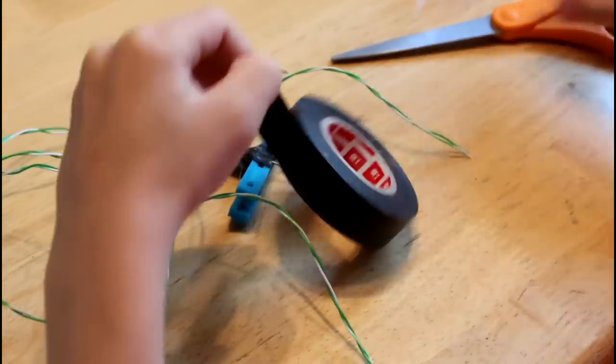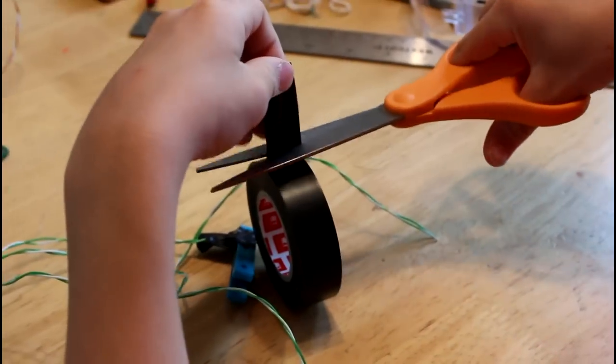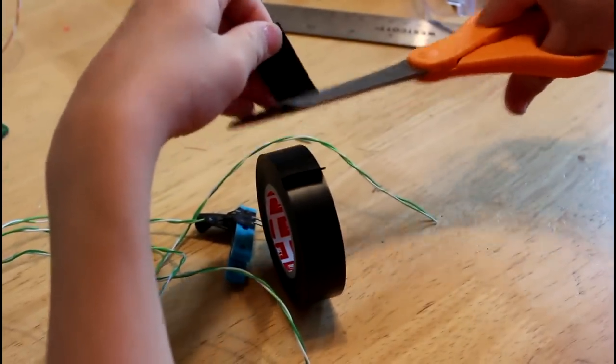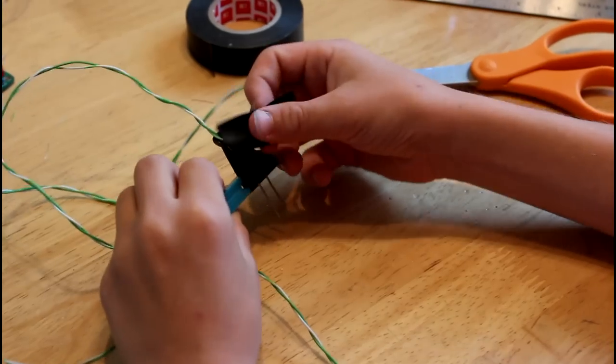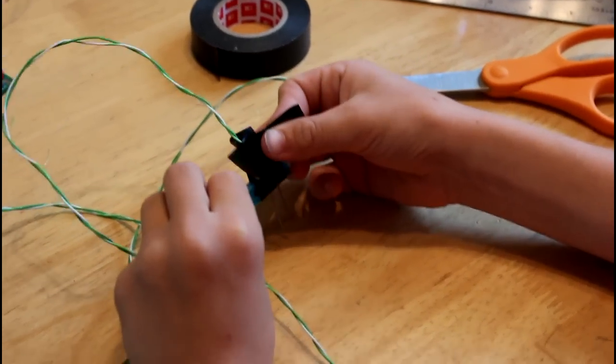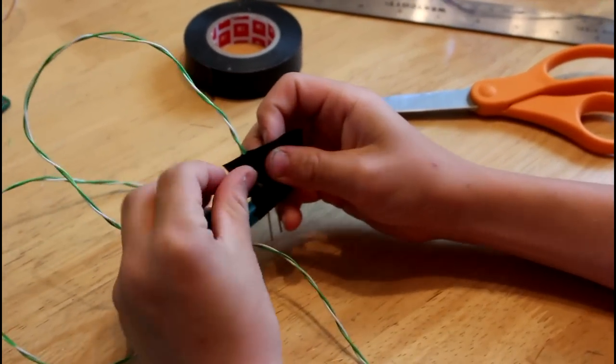Cut another piece of tape about 4 centimeters long and put it around the other piece of tape so that it kind of makes a collar shape.